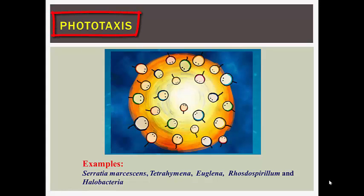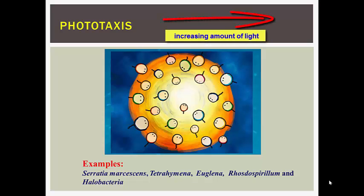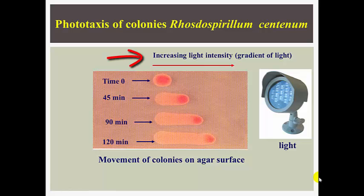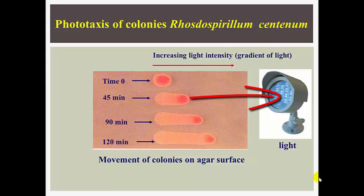Bacterial phototaxis refers to the ability of bacteria to sense light changes in their extracellular environment and to bias their motility towards or away from light. Phototactic responses are observed in many organisms such as Serratia marcescens, Tetrahymena, Euglena, Rhodospirillum, and Halobacteria. The behavior of phototaxis is a directed movement up a gradient of increasing light, analogous to positive chemotaxis in which light is the attractant rather than chemicals. This can be demonstrated by the movement of Rhodospirillum colonies towards a gradient of light; phototactic cells move in unison toward the light source.